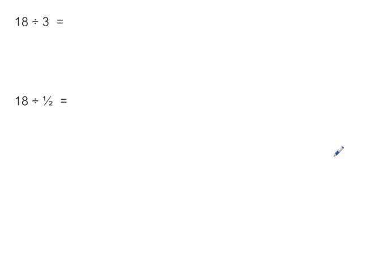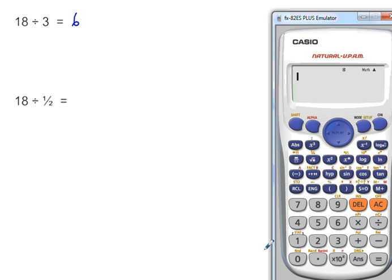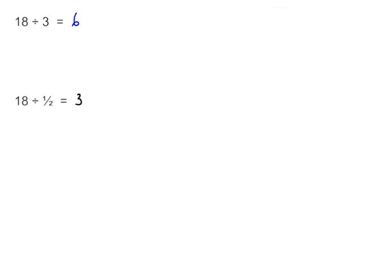Let's look what happens when we divide fractions. Well, we know 18 divided by 3 is 6. But what happens when we divide 18? So let's cancel. 18 divided by half equals 36. And when we were dealing with whole numbers earlier on, I said to you that when we divide, your number gets smaller as long as we're dividing by a whole number. But you can see here that when we divide by a fraction, your number actually becomes bigger.